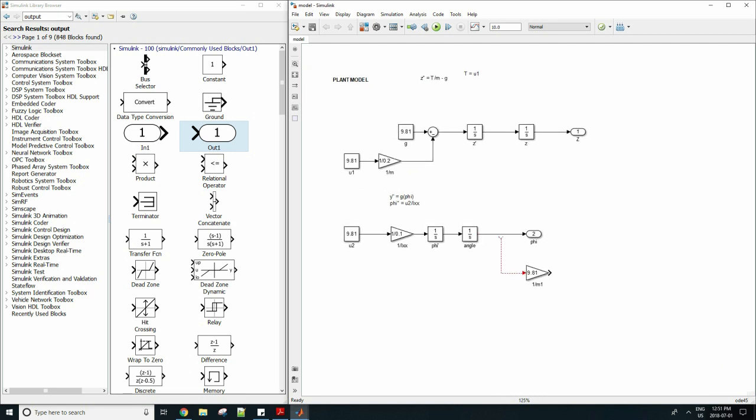So now we need to perform another double integration to obtain y from y double dot. So let's now do this. Once that's done, we can drag in the output and set it to y.